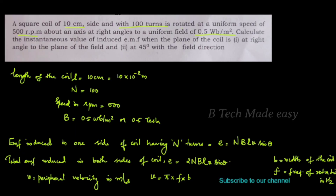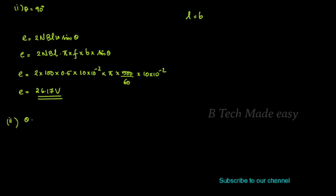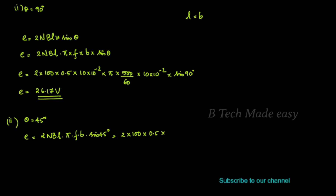Second question: the coil is at 45 degrees to the field direction, so θ = 45 degrees. E = 2N × B × l × π × f × b × sin 45°. Substituting: E = 2 × 100 × 0.5 × (10 × 10⁻²) × π × (500/60) × (10 × 10⁻²) × sin 45°. This gives E = 18.51 volts.